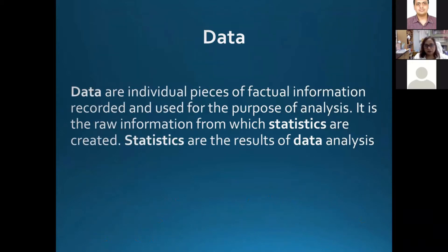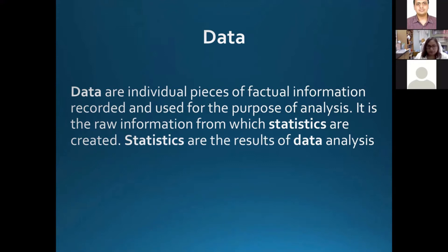Before going on to sample size calculation, we should know what data is, what the various types of variables are, and which variable to choose for calculating sample size. Data is factual information which is recorded and used for the purpose of analysis. It is the raw information from which statistics are created. The sources of data can be primary or secondary. Primary data is collected by ourselves, while secondary data is collected by somebody else for another purpose but used for our research, like data from hospital records.